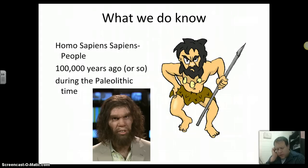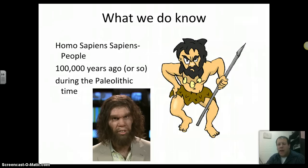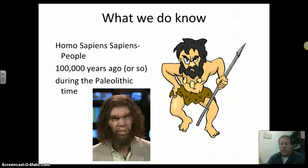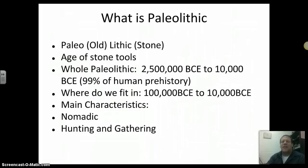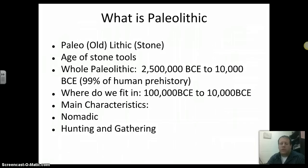We think of this stereotypic caveman — wearing furs, carrying a spear or a bow. What is the idea of Paleolithic we're talking about? Literally, Paleolithic means old — that's 'paleo' — and 'lithic,' which means stone. Putting it together, we have the Old Stone Age, essentially a time when stone tools were used.